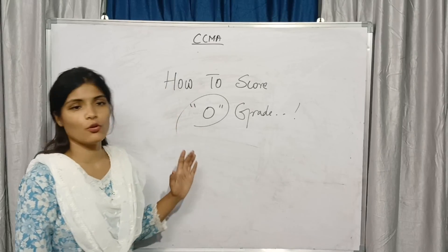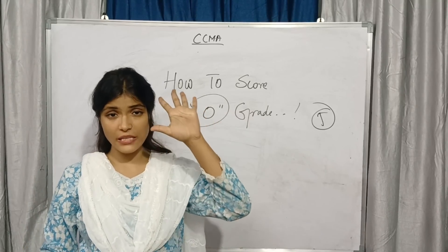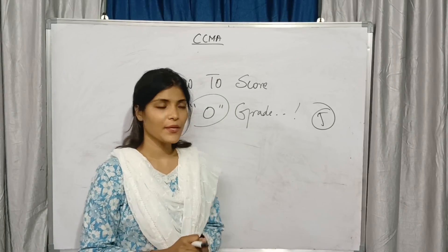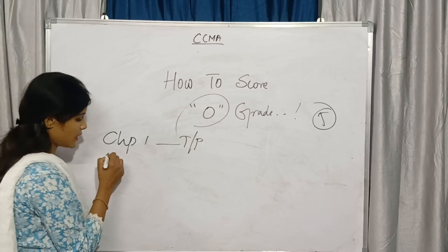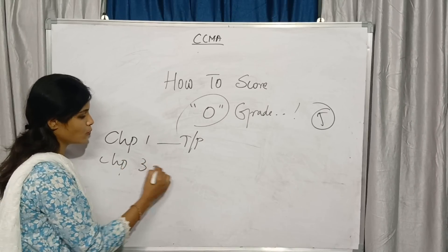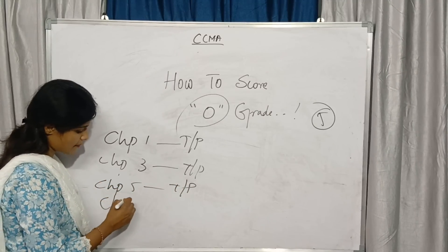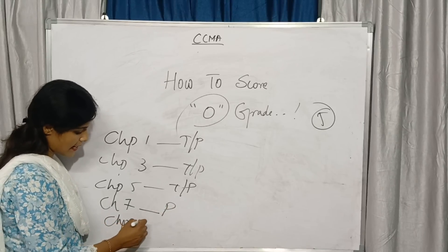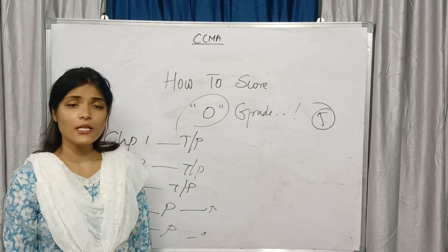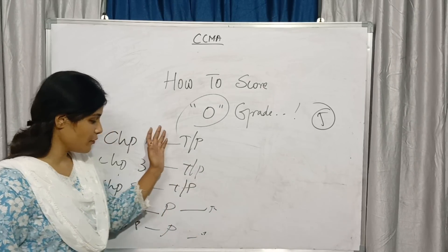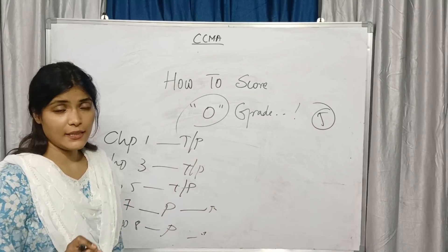If you want to score O grade, all 5 units need to be prepared — unit 1, unit 2, unit 3, unit 4, unit 5 — everything, both theory and problematic questions. For example, in unit 1 prepare chapter 1 theory and problematic; unit 2, chapter 3 theory and problematic; chapter 5 theory and problematic; chapter 7 only problematic; chapter 8 only problematic — because fund flow statement and cash flow statement will definitely get one problematic question. Theory for those might come but is not certain.